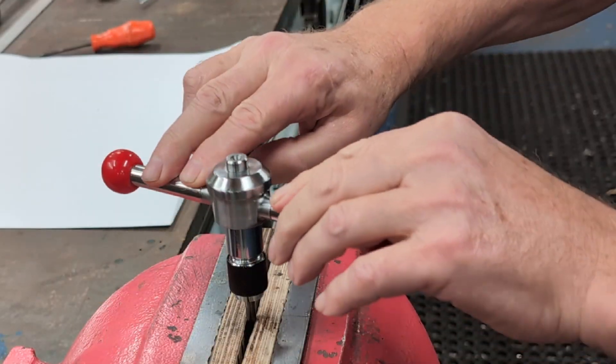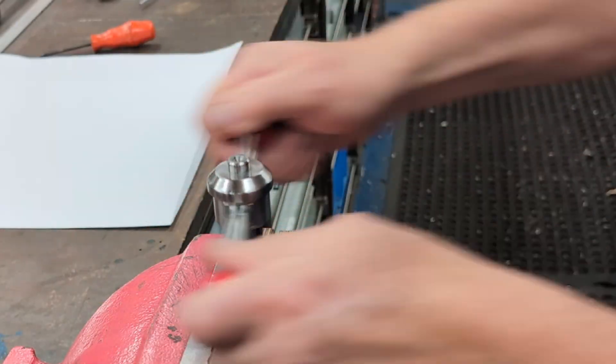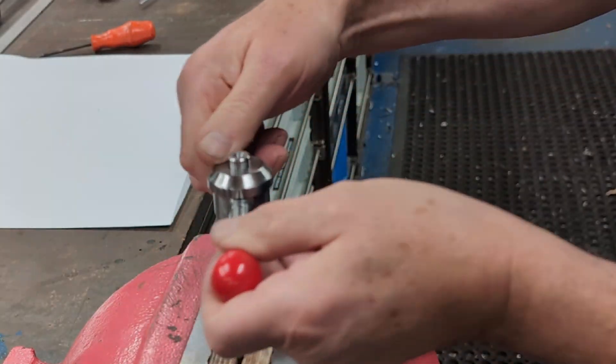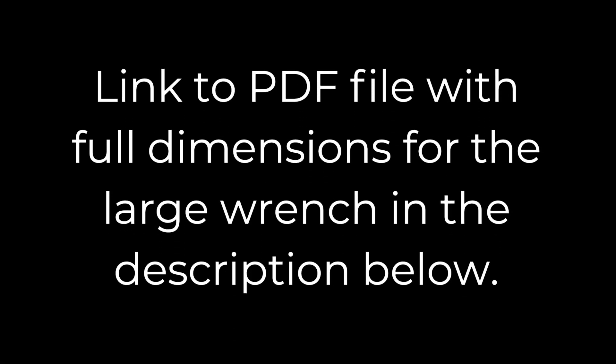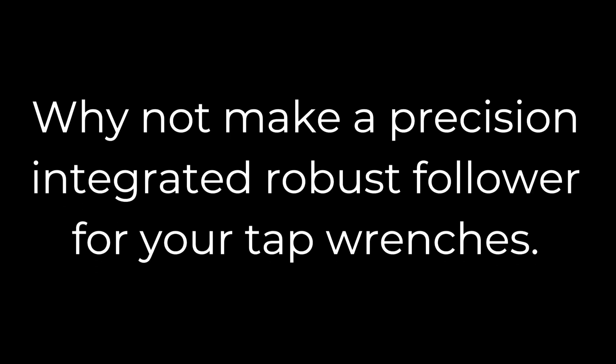So that's the overview of the new clutch type tap wrench designs. A lower profile, more control and easier operation without ever losing grip. I'm still refining a few details but I'm really pleased with how these are coming together. Thanks for watching and as always, I appreciate you spending some time in the workshop with me. See you in the next one.